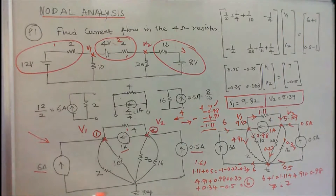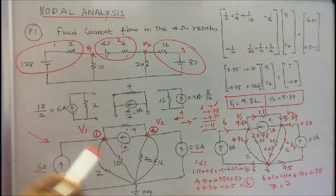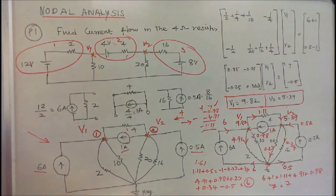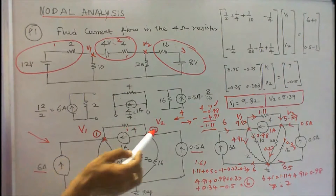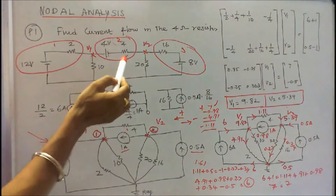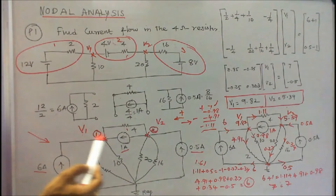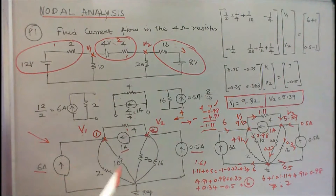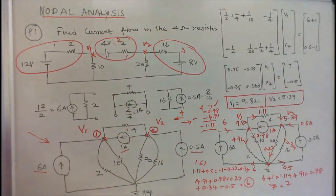Now I redraw the circuit after converting into current sources. There are three nodes. This is considered as the reference node; this is node 1; this is node 2. Once I know the node voltages, V1 minus V2 divided by 4 gives the current flow in the 4 ohm resistor. I assume current towards the junction is positive, and current leaving the junction is negative.